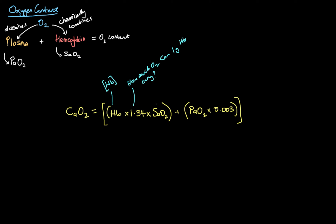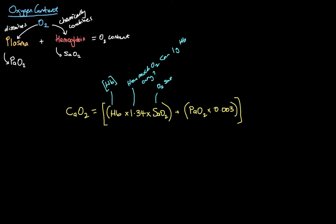The next thing we need to know is how saturated the hemoglobin is, because hemoglobin can carry 1.34 ml of oxygen per gram when fully saturated, but it won't always be 100% saturated. So we multiply by the oxygen saturation, which is expressed as a percentage. This part of the equation relates to the oxygen that is bound to hemoglobin.